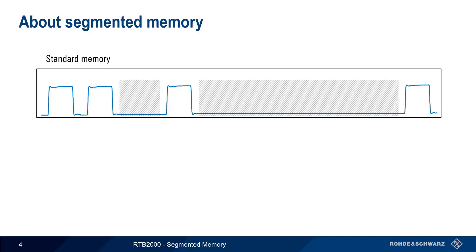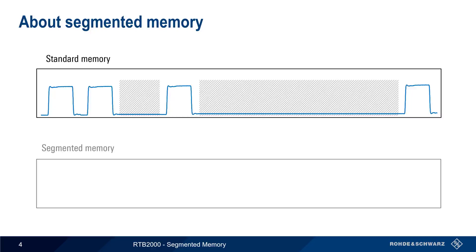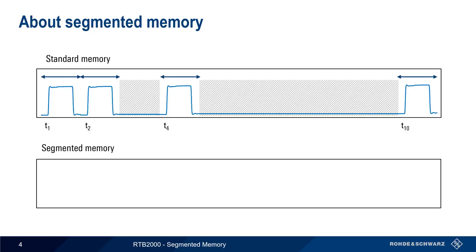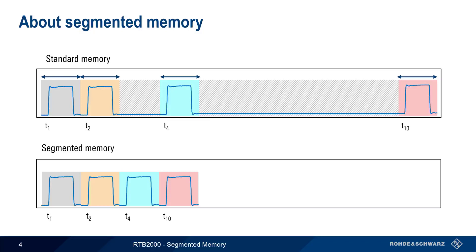Here, only about 40% of our memory is being used to store interesting data. Segmented memory is a way to use memory more efficiently when trying to capture or analyze infrequent events. We could configure our oscilloscope to trigger on each pulse and define how much time, or rather how many samples, the scope should acquire for each trigger. Each of these periods then becomes a segment, which is stored in segmented memory along with that segment's timestamp. As you can see, this mode makes much more efficient use of the limited oscilloscope memory.